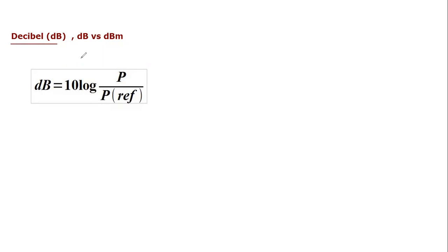Decibel is a logarithmic unit in which you compare two different physical quantities. Usually it is used for power levels. For example, you can compare signal receive with a signal reference receive level, or you can also compare signal level with the noise power level.